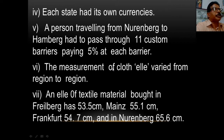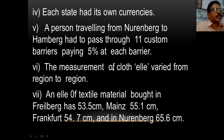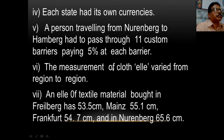For example, Germany had 39 states and each state had its own currency, so it was very difficult to do business. A person travelling from Nuremberg to Hamburg had to pass through 11 custom barriers paying 5% at each barrier — 11 into 5 means 55% tax he had to pay. Just like we have local custom barriers such as Wall-Air and Mutanga barrier where we have to pay taxes.